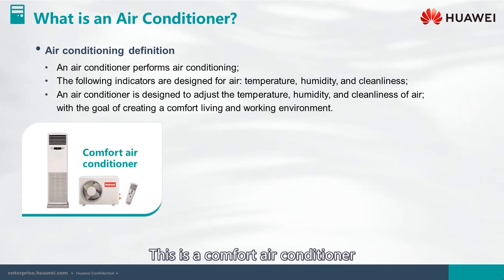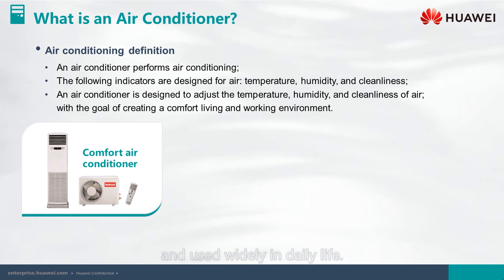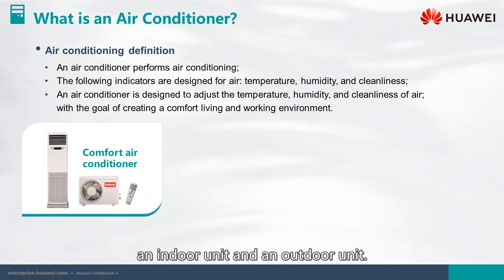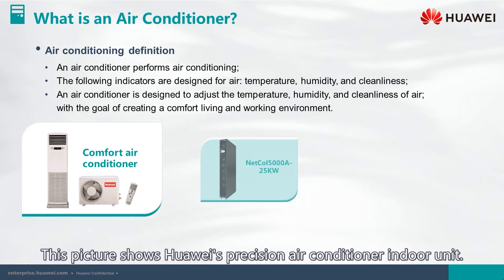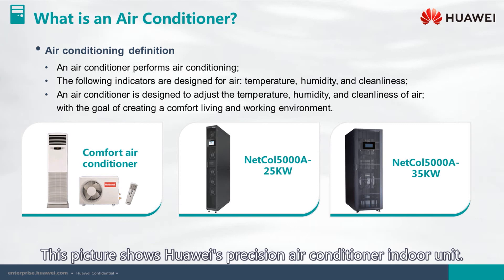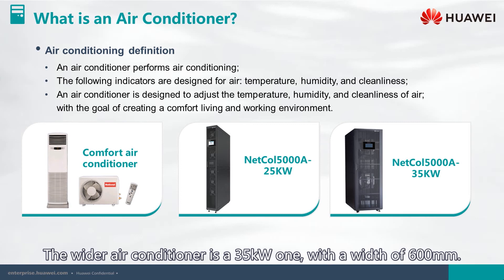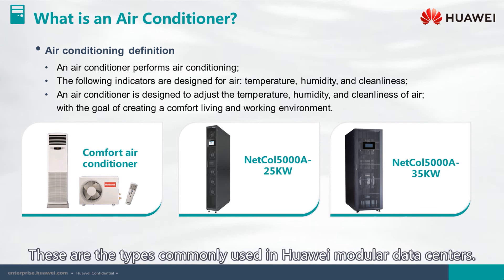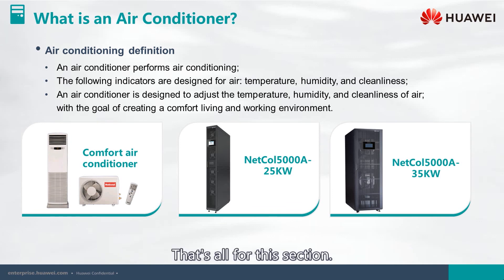This is a comfort air conditioner like we would find in a home, used widely in daily life. Generally speaking, air conditioners like this comprise two parts: an indoor unit and an outdoor unit. This picture shows Huawei's precision air conditioner indoor unit. The wider unit is a 35-kilowatt model with a width of 600 millimeters, and the other is 25 kilowatts with a width of 300 millimeters. These are the types commonly used in Huawei modular data centers.